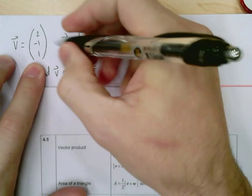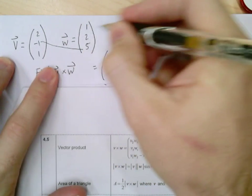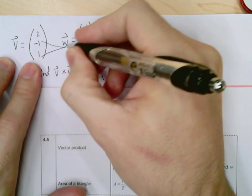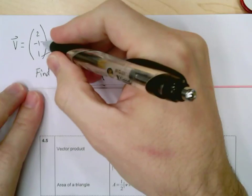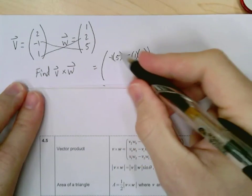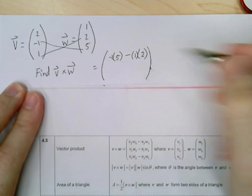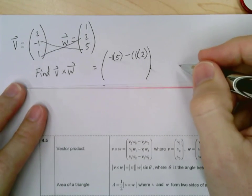Now hopefully you recognize that this is just a cross. It's negative 1 times 5 and then it's 1 times 2. So the one here going down from V to W is the one that comes before the minus sign. And then one going up from left to right is the one that's on the right hand side.